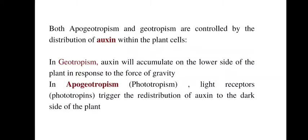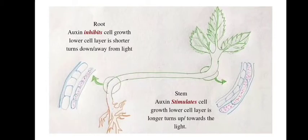Both apogeotropism and geotropism are controlled by the distribution of a plant hormone called auxin within the plant cells. In geotropism, auxin accumulates on the lower side; similarly in apogeotropism, auxin accumulates on the lower or dark side of the plant. In both conditions auxin accumulates on the back side of the cells, but in roots it inhibits cell growth, while in stems it stimulates cell growth.